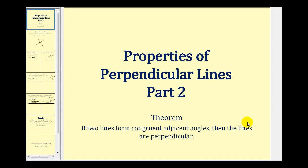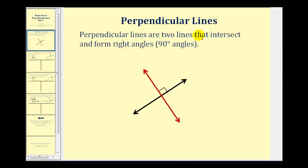Welcome to a second video on the properties of perpendicular lines. In this video we'll prove the theorem: if two lines form congruent adjacent angles, then the lines are perpendicular. Let's review the definition of perpendicular lines — perpendicular lines are two lines that intersect and form right angles, and right angles measure ninety degrees.